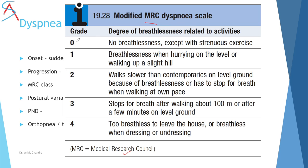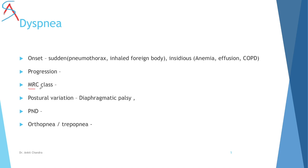The MRC dyspnea scale starts from grade 0 — no breathlessness except with strenuous exercise. Grade 1: breathlessness when walking uphill. Grade 2: must stop for breath when walking at own pace. Grade 3: must stop after walking about 100 meters. Grade 4: too breathless to leave the house, limited to home. Use MRC classification to describe progression — for example, MRC class 1 four months ago, now progressed to class 3.